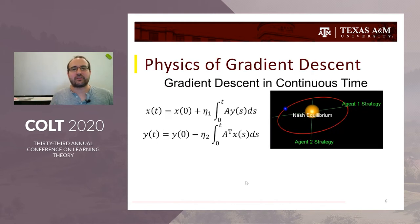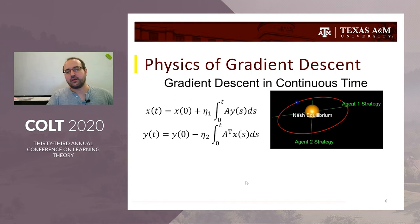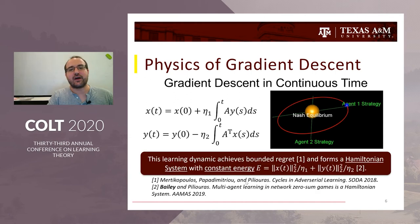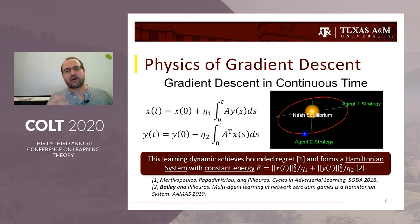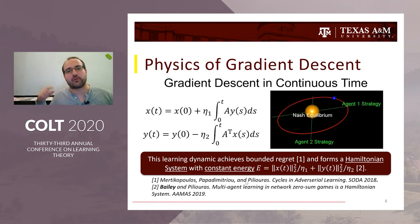Our paper doesn't study the continuous-time setting — we work solely in discrete time. But it's important as a motivating case: when you apply gradient descent in continuous time, you get 1 over t time average convergence, as one of my co-authors Yorgo showed a couple years ago. Moreover, I showed last year that this forms something called a Hamiltonian system — the fundamental building blocks of physics, explaining things like the Earth revolving around the sun and springs bouncing back and forth.